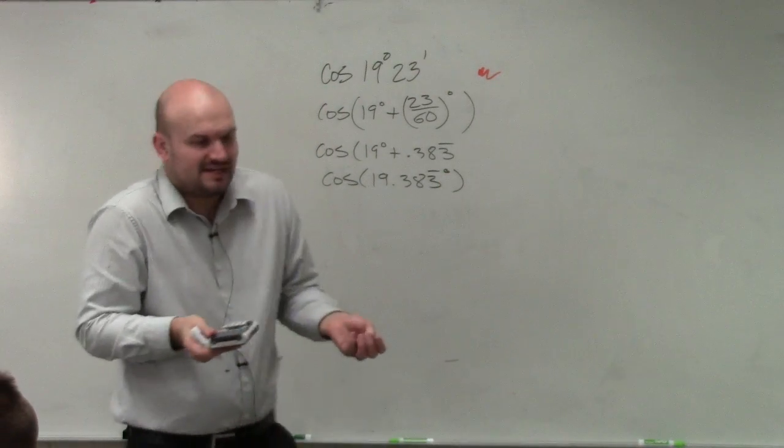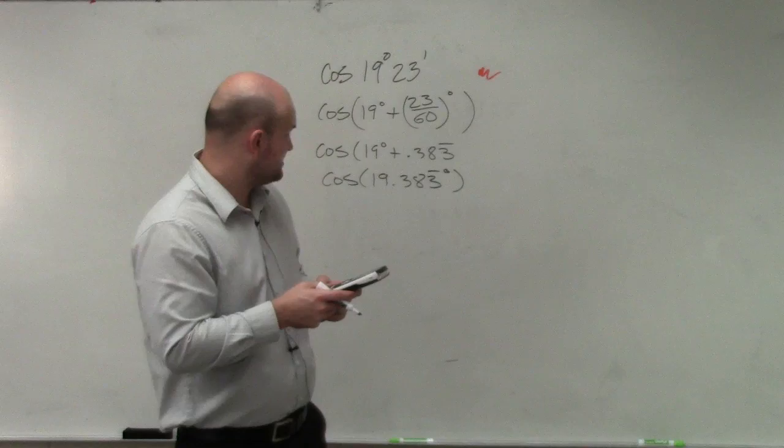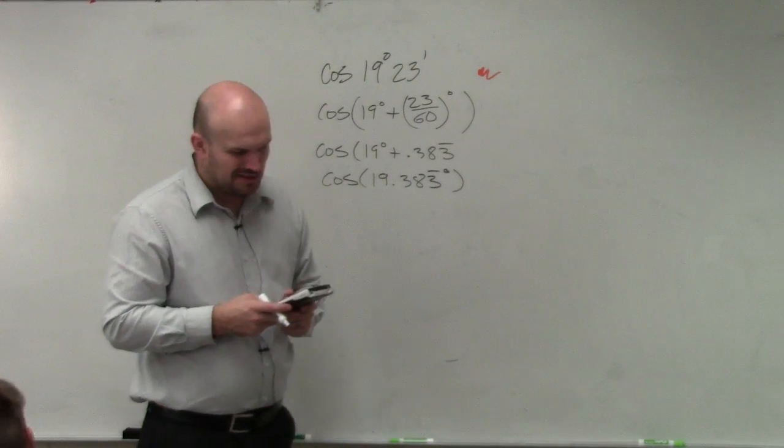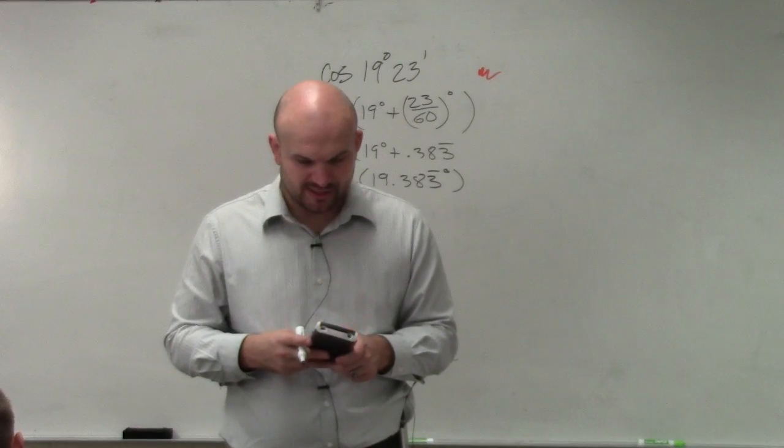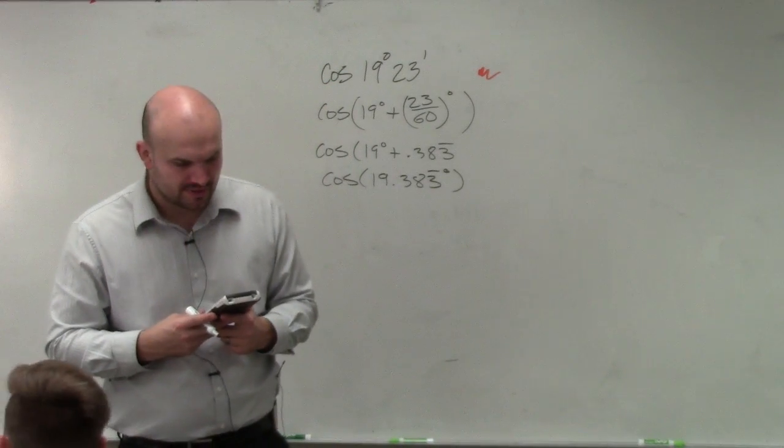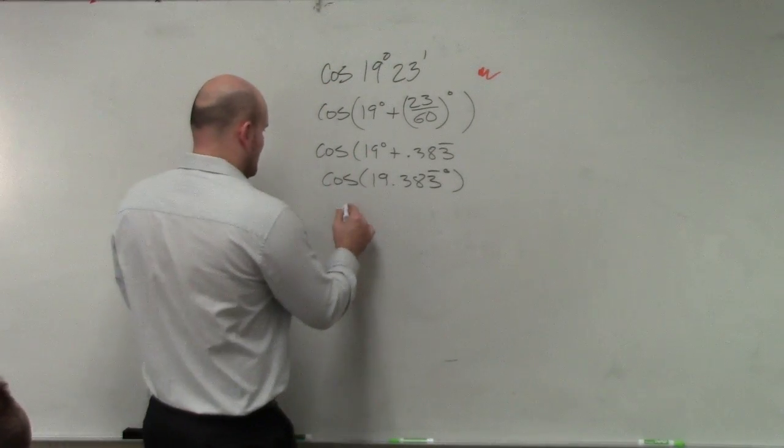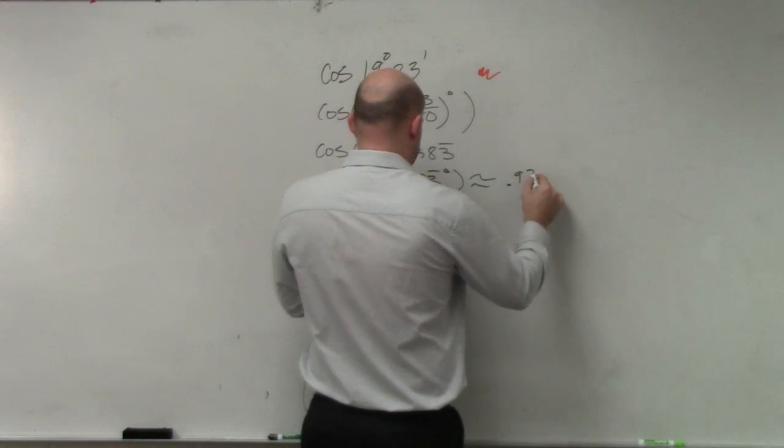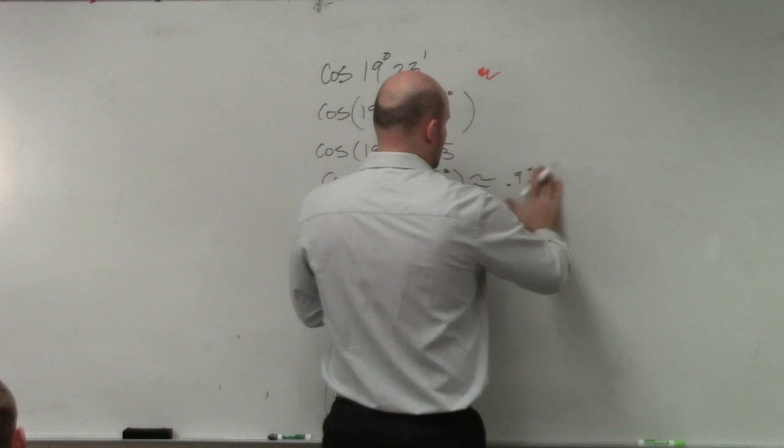Now, I obviously can't write into repeating. So I'm going to type in as many 3s as I want to. So I'll type in like 10 3s here to really give me a good point. And I end up getting approximately 0.943.